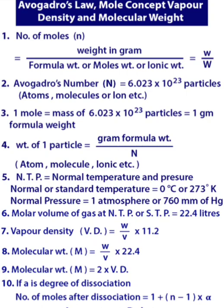Next one is vapor density. Vapor density is equals to W upon V into 11.2. If you are calculating vapor density, then you have to take weight in grams upon volume into 11.2.